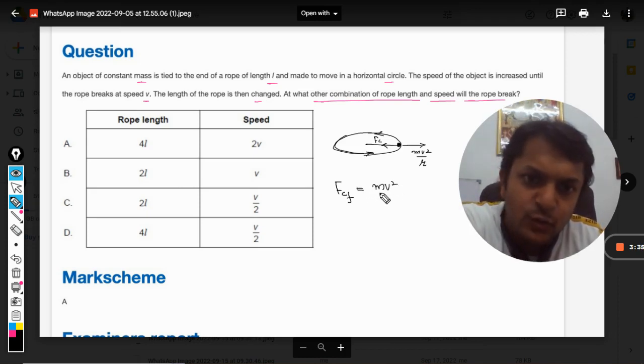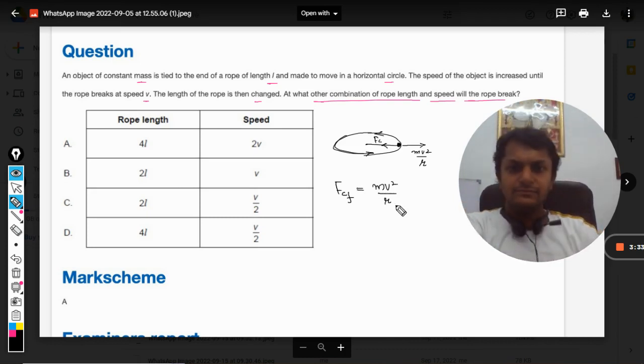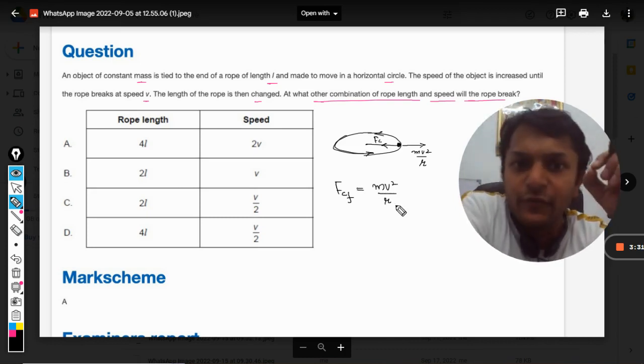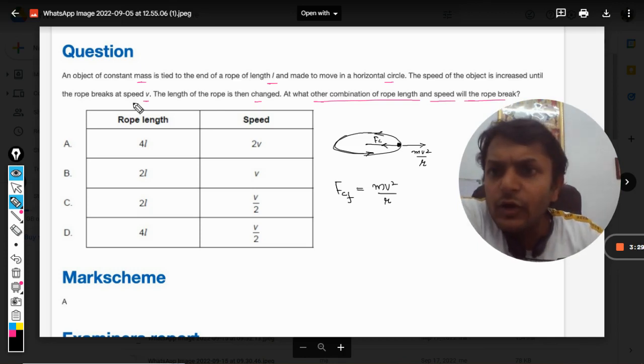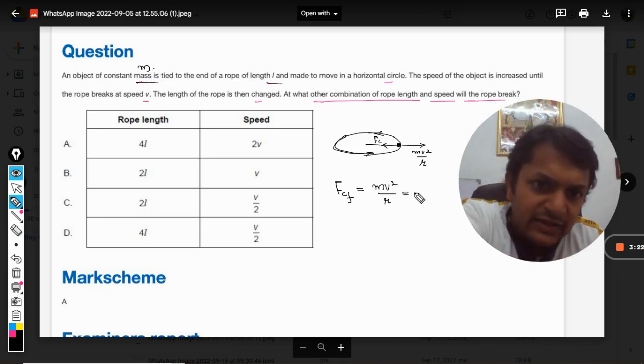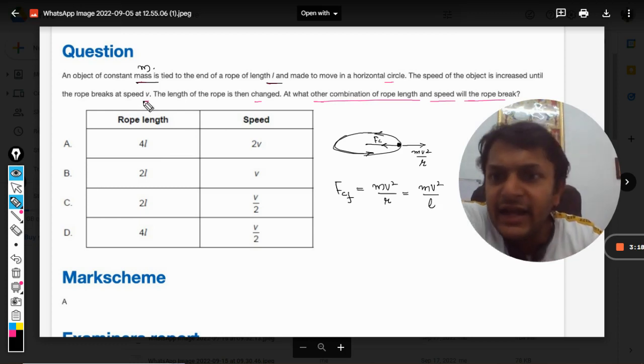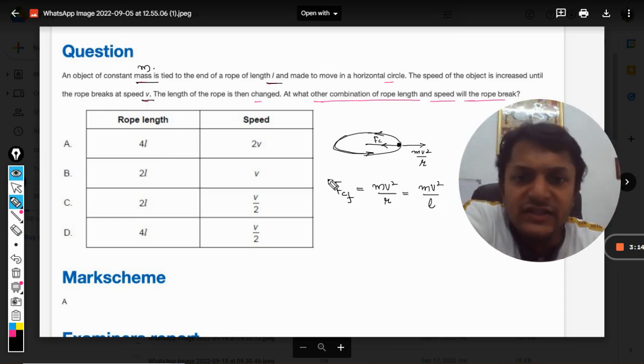This is centrifugal force. Now in case number one, the mass is M and the length of the rope is L, so the radius will be L. So it will be given by mv²/L, and at speed V the rope breaks.